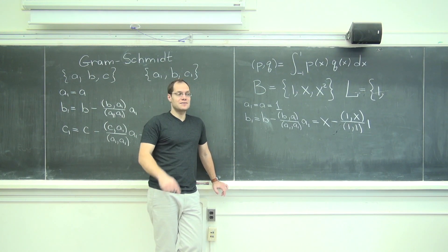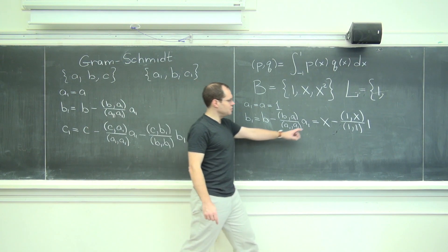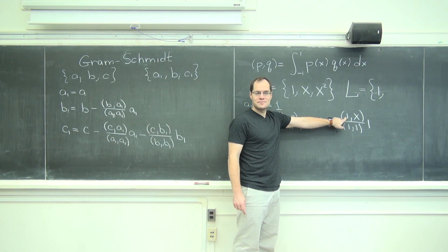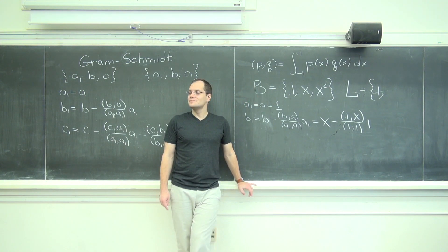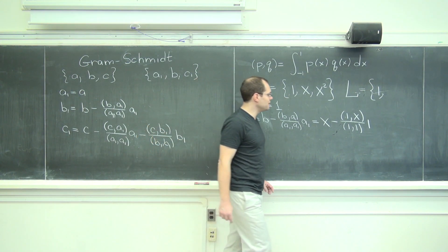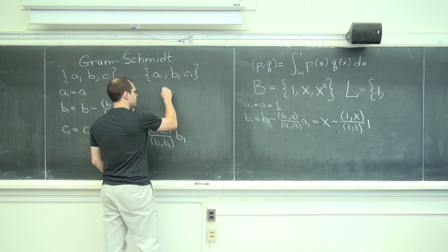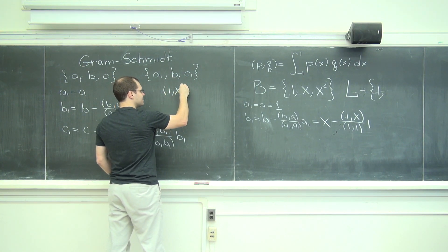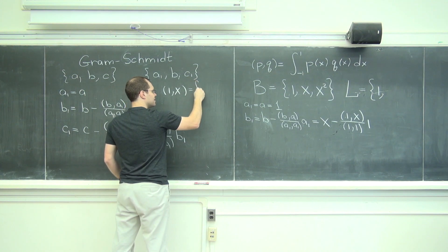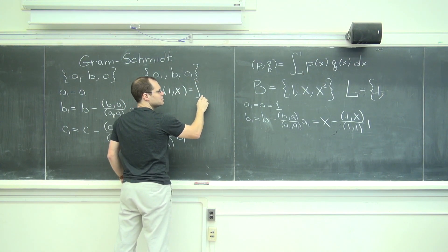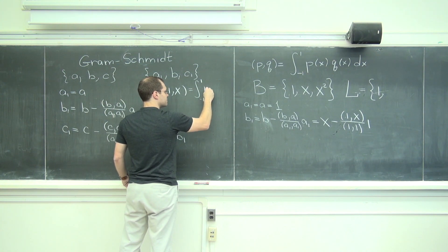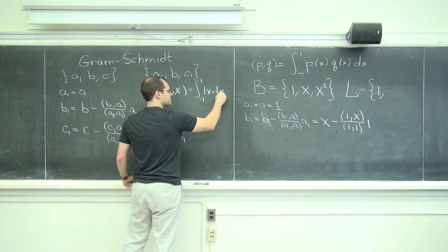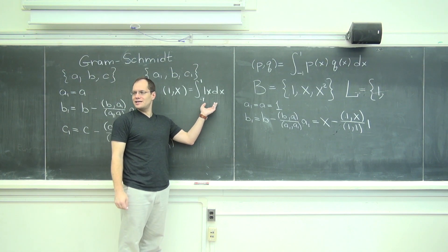Okay. Now you guys have to do a little bit of hard work and tell me what 1 dotted with x is and what 1 dotted with 1 is. Let's start with 1 dotted with x. How about we do it right here? 1 dotted with x equals integral from minus 1 to 1 of 1 times x dx.